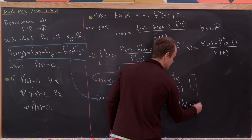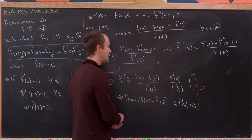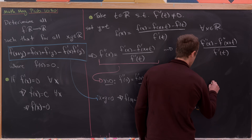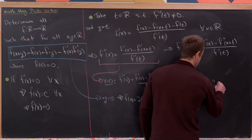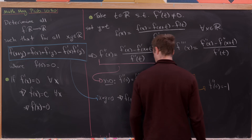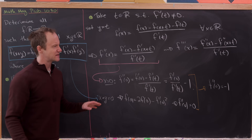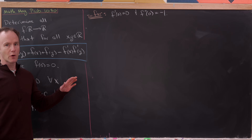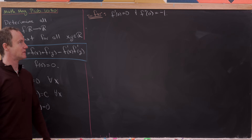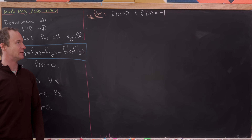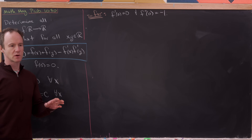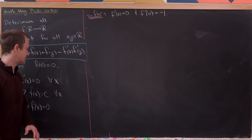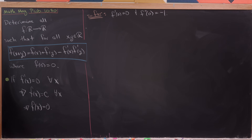Putting these together, we immediately get an equation for f''(0): f''(0) = f'(0)/f'(t) - 1 = 0 - 1 = -1. So far we've determined that f'(0) = 0 and f''(0) = -1, assuming f' is not identically zero.